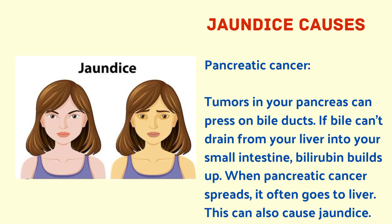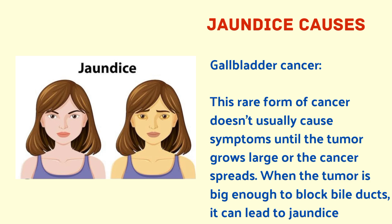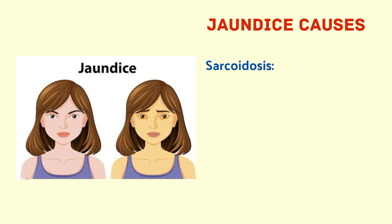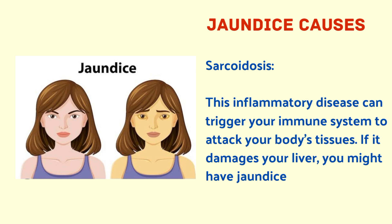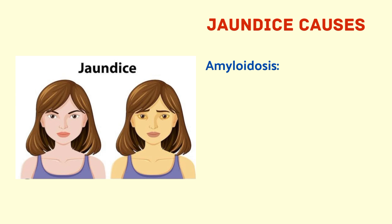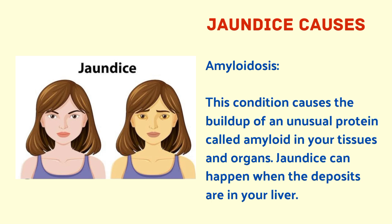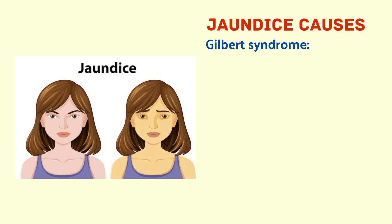Next is pancreatic cancer — tumors in the pancreas can press on bile ducts, and when pancreatic cancer spreads to the liver, it can cause jaundice. Next is gallbladder cancer, a rare form that doesn't usually cause symptoms until the tumor blocks bile ducts. Next is sarcoidosis, an inflammatory disease that can damage the liver. Next is amyloidosis, which causes the buildup of an unusual protein called amyloid in tissues and organs, causing jaundice when deposits are in the liver.